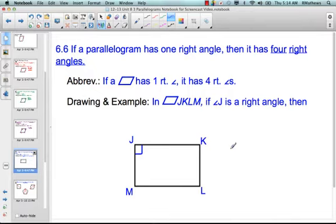That lets you know that all four have to be right. Remember, a right angle equals 90 degrees. And so you can just say then that angle K, angle L, and angle M are also right. You could also say the measure of each equals 90.